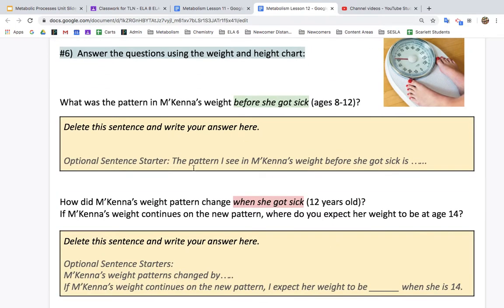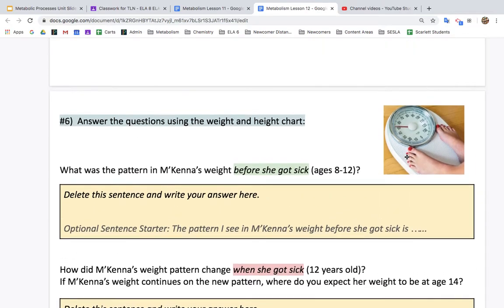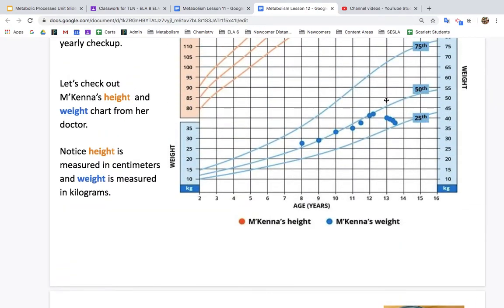So here I might say the pattern I see in McKenna's weight before she got sick is her weight is average.